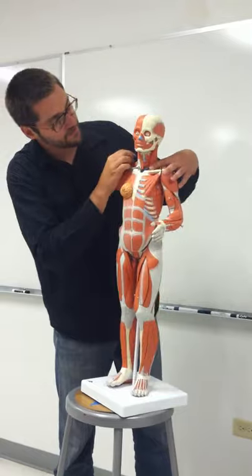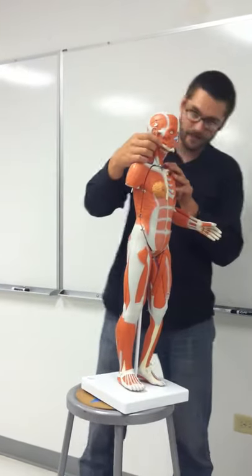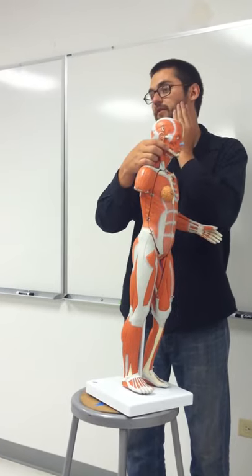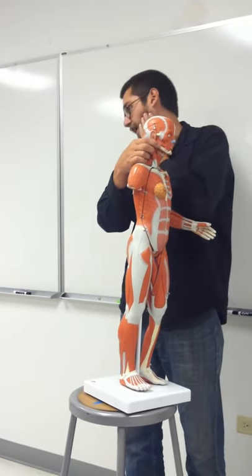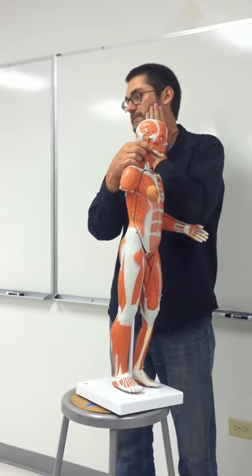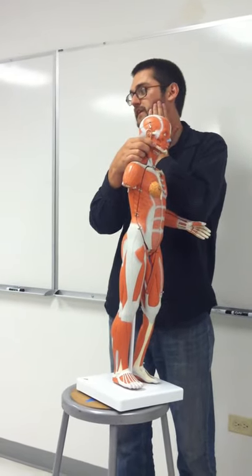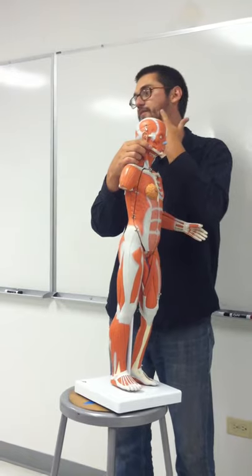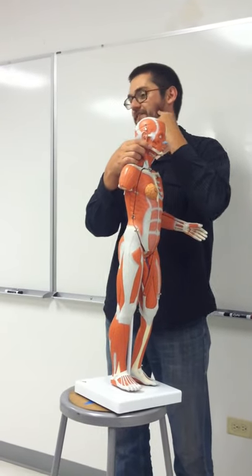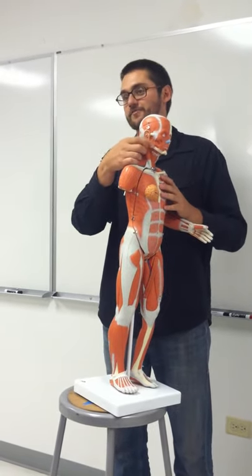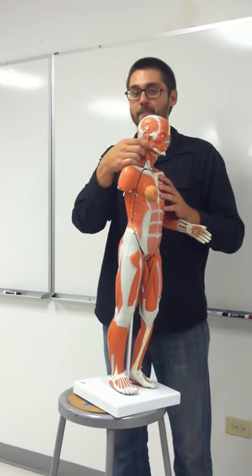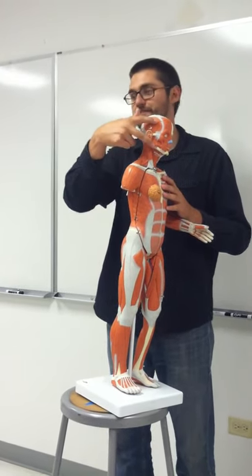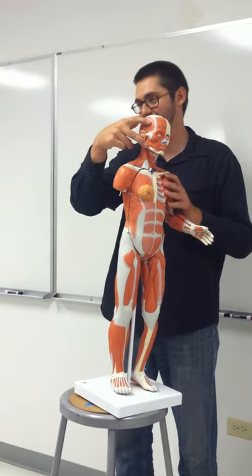Masseter is on the inferior side of your mandible. When you chew, you can feel it project out. If you go to the dentist and they inject for teeth in your mandible, they inject into the masseter muscle. So you've got temporalis and masseter — both muscles of mastication, chewing muscles.